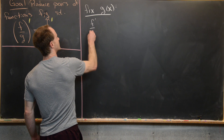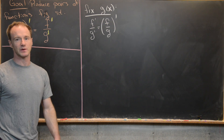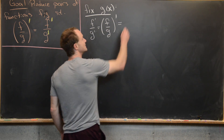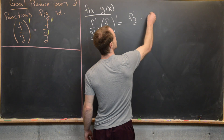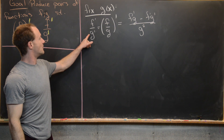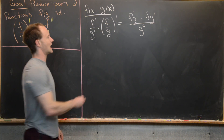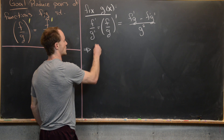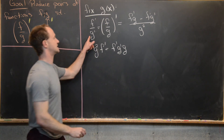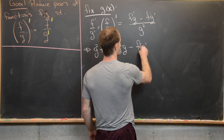So we have f prime over g prime equals (f over g) prime. That's the differential equation we want to solve. We know the actual quotient rule exists and we can apply it to the right-hand side, giving us f prime times g minus f times g prime, all over g squared. Now let's multiply both sides by g prime and g squared to clear the denominators, giving us g squared times f prime equals f prime times g prime times g minus f times g prime squared.